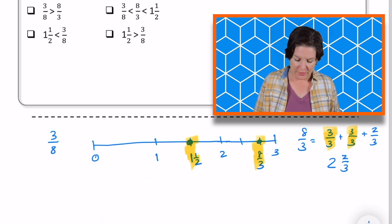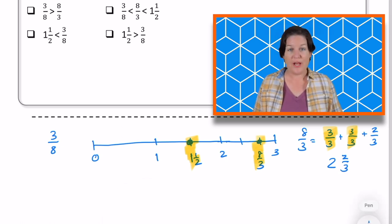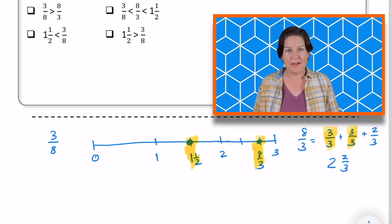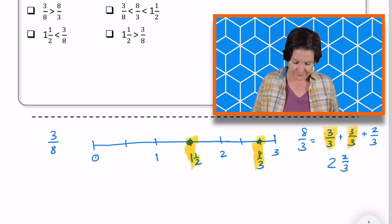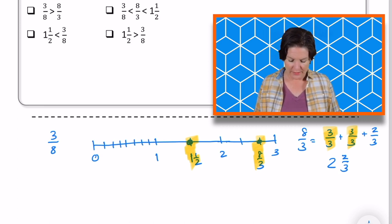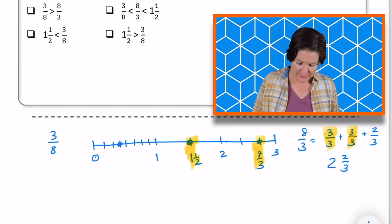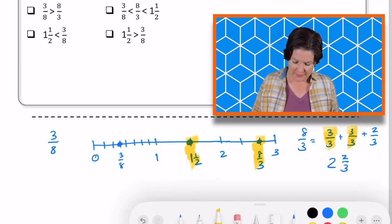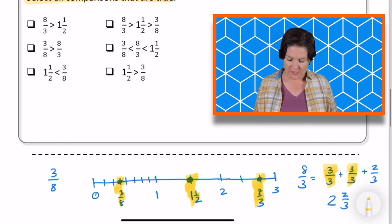And you know what? I'm going to go ahead and put on my 3 8ths just in case. So I know that in between 0 and 1, I need to break that into 8ths. So first I'll break it into 1⁄2 and then break it into 8 equal parts. And 3 8ths would be right here.